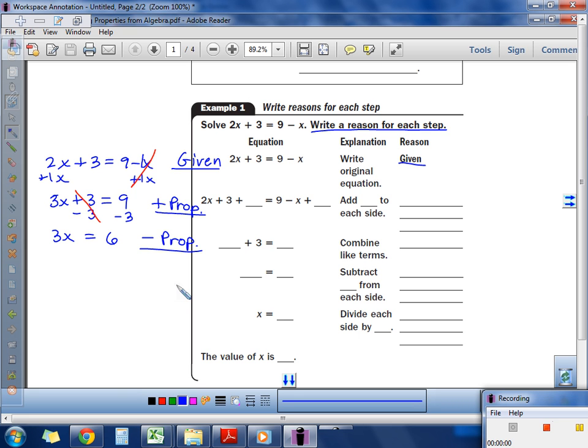Last step, what do we do? Divide by 3. Nobody really has problems with that step. Once again, the 3 is canceled. I'm left with 6 divided by 3, which is 2. I write what property? Division property. Good job.